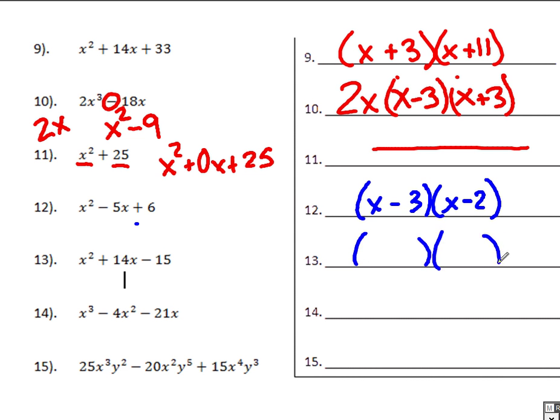Problem 13, two numbers that multiply to 15 and subtract to 14 will be 15 and 1. Don't forget about that nice and basic easy one. Positive 15, it's the bigger number, gets the sign in front. Negative 1 because you multiply those numbers to get negative 15.